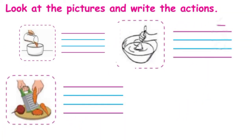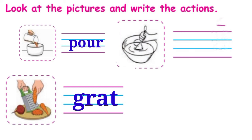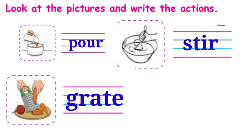Next, look at the pictures and write the actions. In the first picture, what action is done? Yes, pour — P-O-U-R. In the second picture, what are they doing? Yes, grate — G-R-A-T-E. Next, see the third picture. What are they doing? Yes, stir — S-T-I-R.